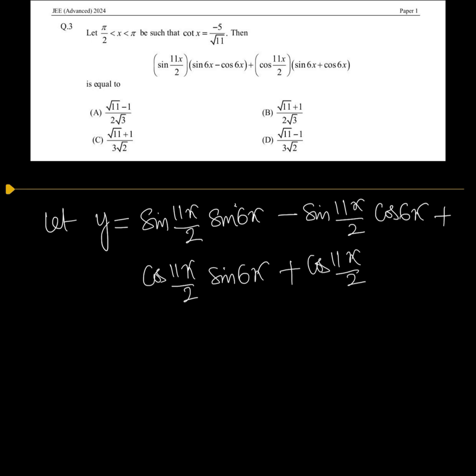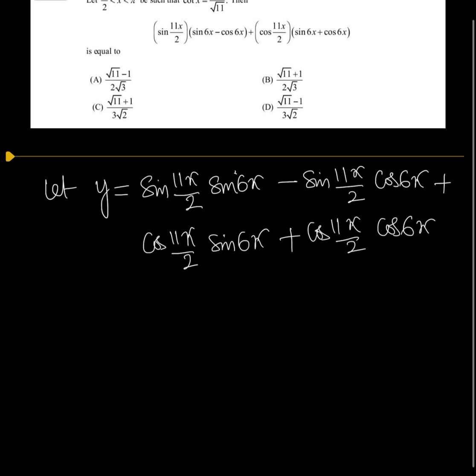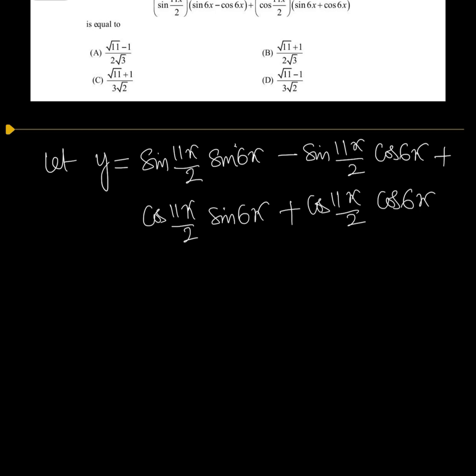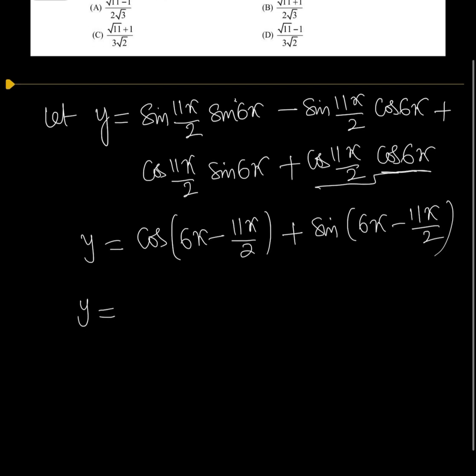If you observe, the first and last terms are in the form cos a·cos b + sin a·sin b, which is cos(a - b). So we get cos(6x - 11x/2). The second and third terms give sin(6x - 11x/2). Therefore, y = cos(x/2) + sin(x/2).